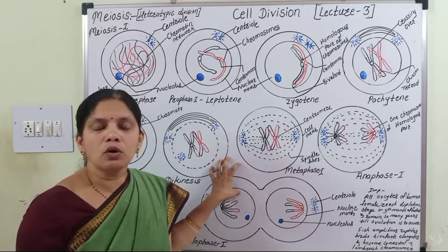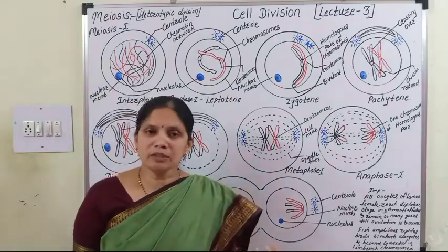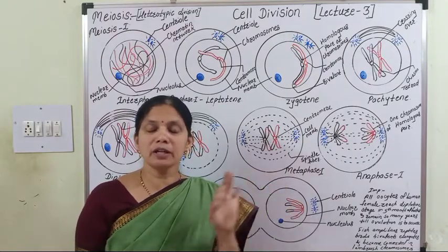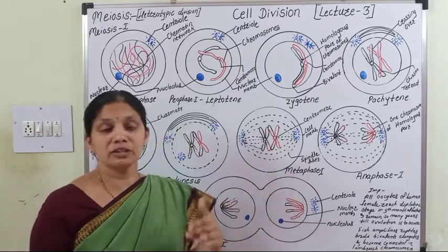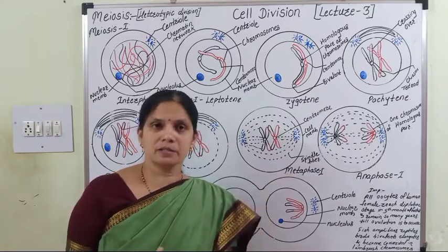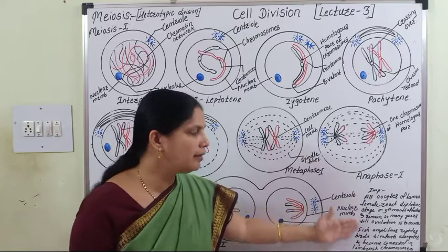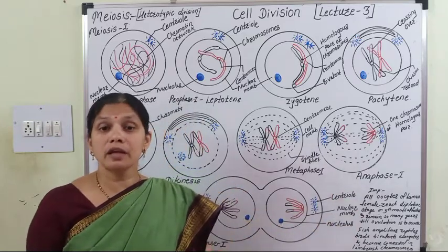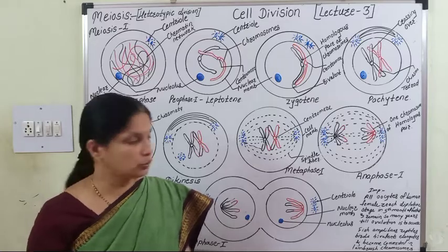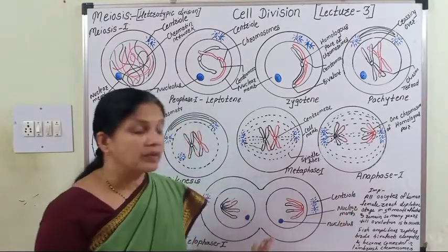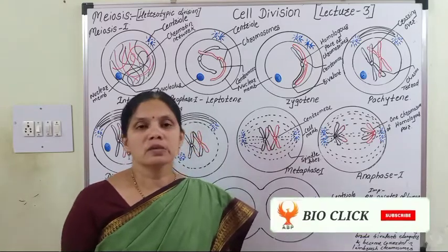Important exam questions include: describe the various stages of prophase I; identify and describe diagrams of the stages; identify which cells remain in the diplotene stage; and note that crossing over takes place in pachytene, while chiasmata formation and terminalization take place in diakinesis. In the next lecture, we will discuss meiosis II. Thank you very much.